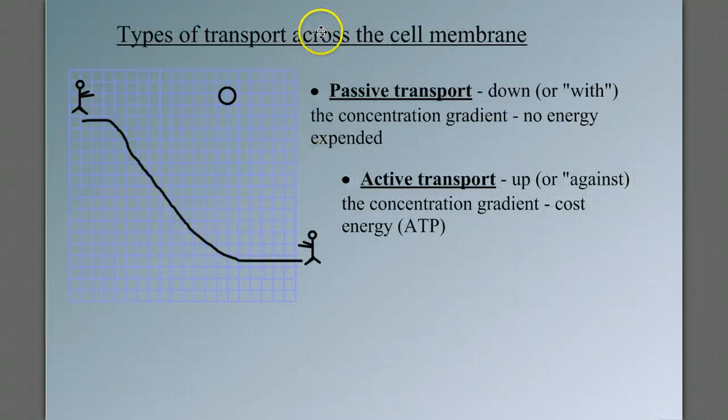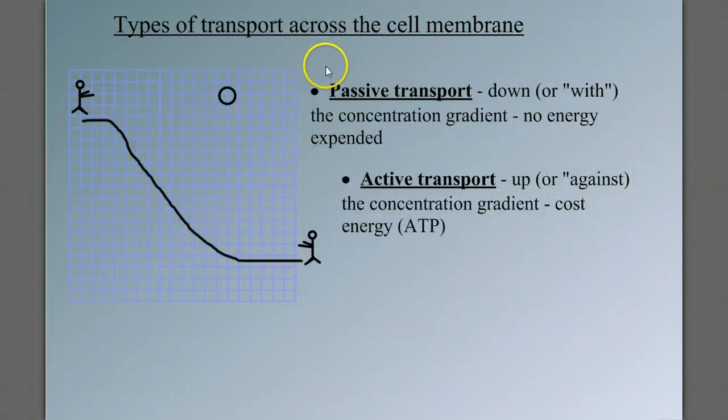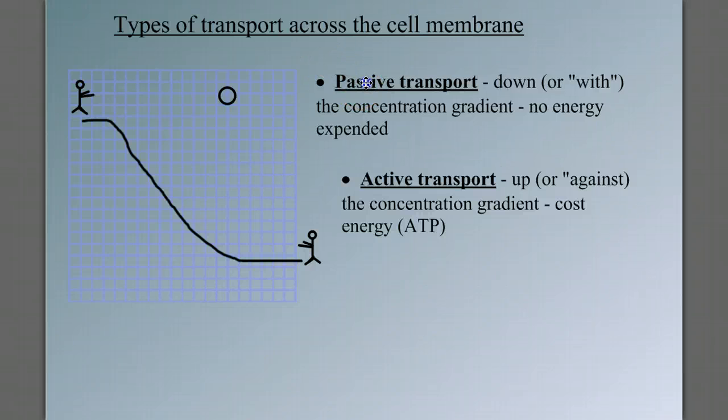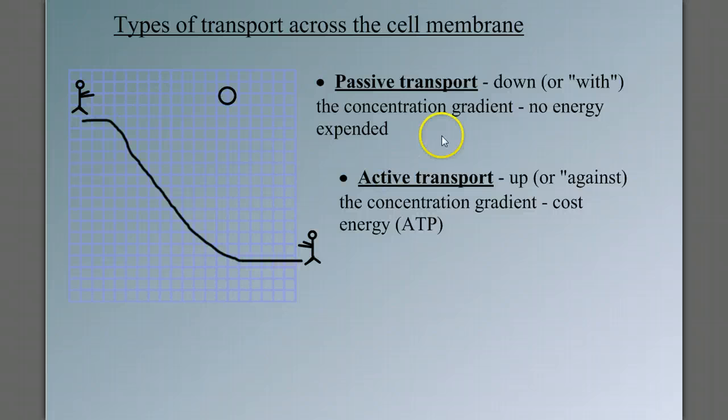How do things get across the cell membrane? Well, before we get into the specific types of transport, we need to talk about two broad categories, passive transport and active transport.